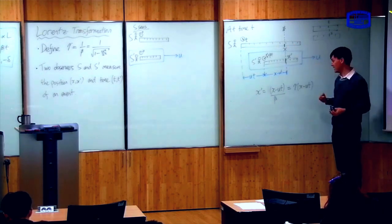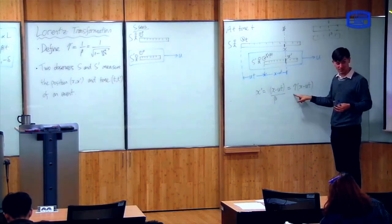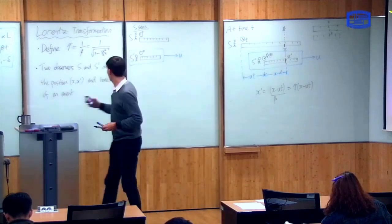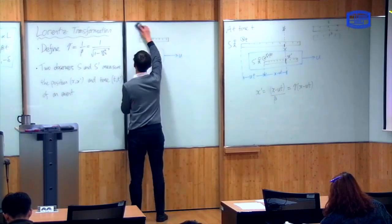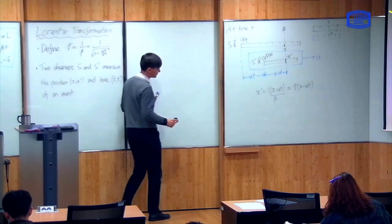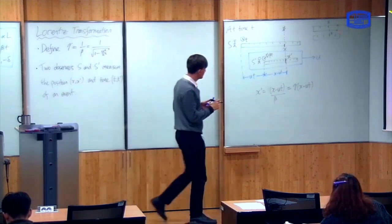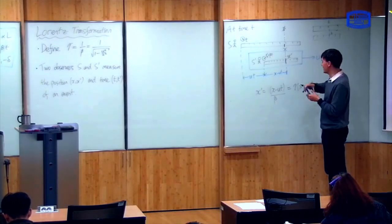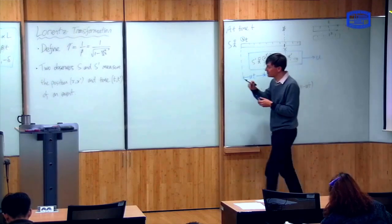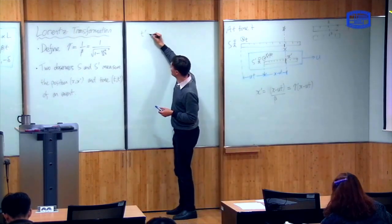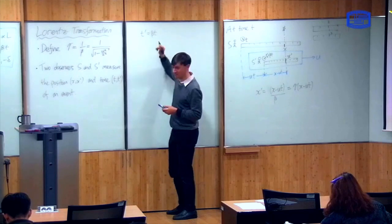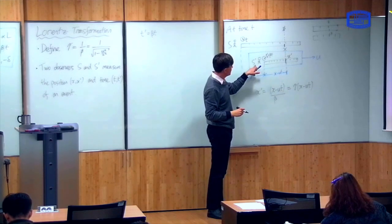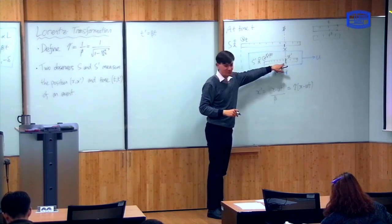So now we need to do the same thing with time. Time is a bit more tricky. The reason is that T prime is not simply beta times T — that's not the right answer. The reason is that S prime needs to measure the time of the event over here, and in order to do that S prime will need to have a second clock at the position of the event.